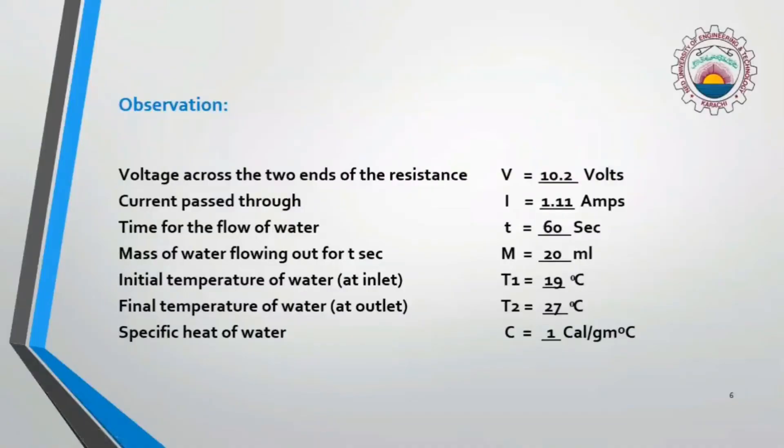These are the observations that we have taken from our experiment. First of all, we have voltage across the two ends of the resistor that is 10.2 volts. Then the current passed through the glass tube is 1.11 amperes.